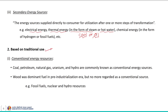The next classification is based on traditional use, sub-classified into non-conventional and conventional energy resources. Conventional energy resources are those traditionally used over many decades or in common use around the era of the oil crisis. Coal, petroleum, natural gas, uranium, and hydro are commonly known as conventional energy sources. Wood was the dominant fuel in the pre-industrialization era but is no longer regarded as a conventional energy resource.